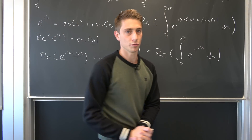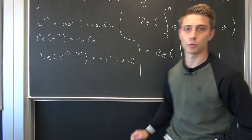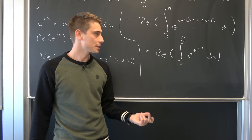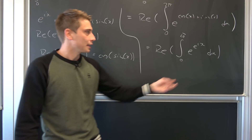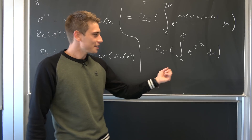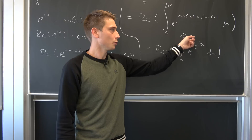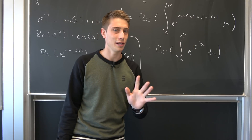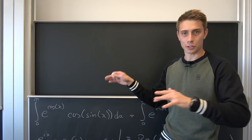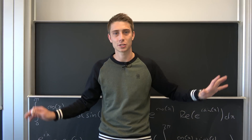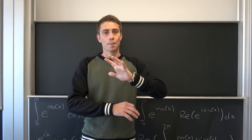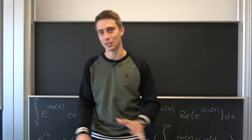And here come the real problems. Nearly every real method I was using was just not working, because with e to the i times x we are working on the unit circle. The interval of integration is from zero to two pi, which is a full loop, and that's the problem. I never took a complex analysis class — everything I'm saying about complex analysis is self-learned.